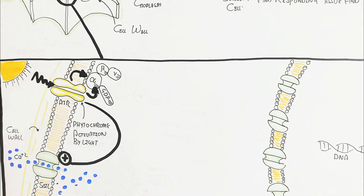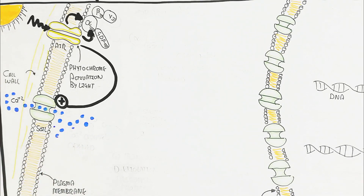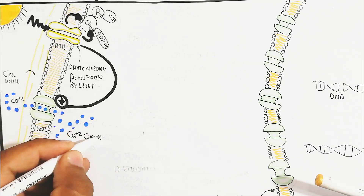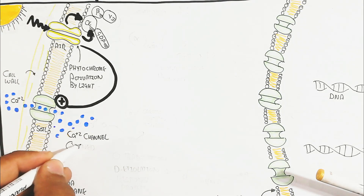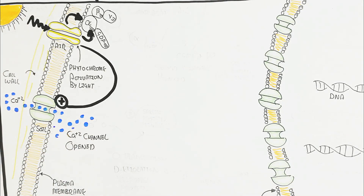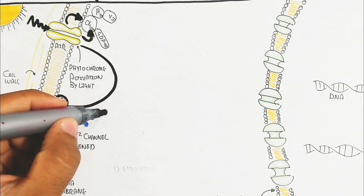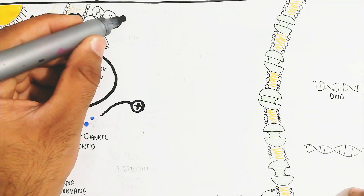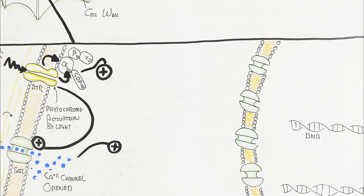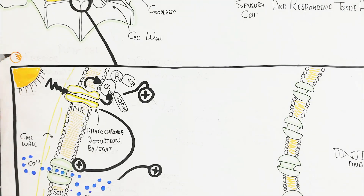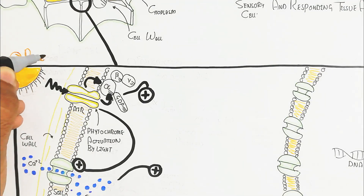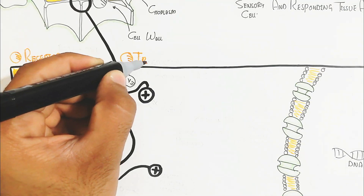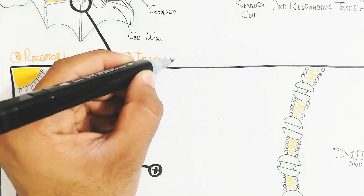Meanwhile, calcium — a mineral taken up from the soil at the root tip — enters through calcium channels that open, allowing calcium to move into the cytoplasm from outside. Both the light signal and the calcium signal are important for changing the physiology of the plant. This represents the receptor and transduction stages.